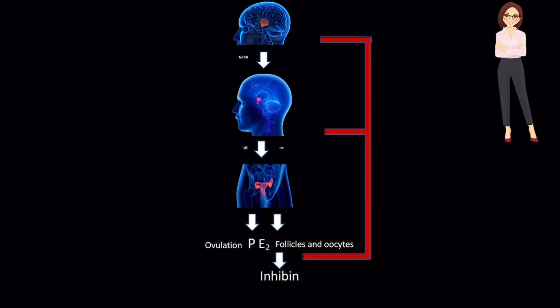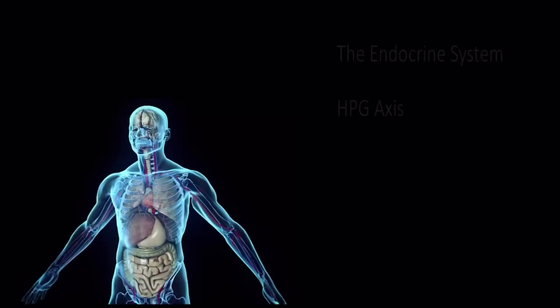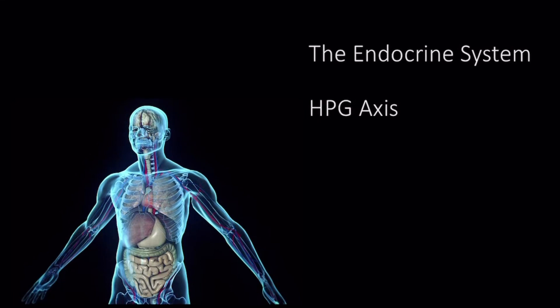So all these hormones and processes of the HPG axis make up only one of the several hormonal axes of the endocrine system, merely providing a glimpse into the vastness of the endocrine system. I hope this video provided you with a good understanding of the HPG axis and a deeper appreciation for the functions of the endocrine system as well as the intricacies of the human body.